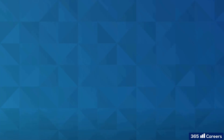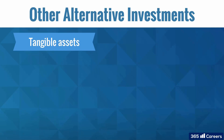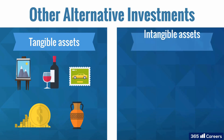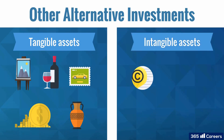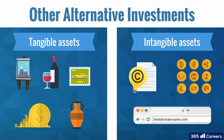Finally, we have investments that fall under the category of other types of alternatives. These include tangible collectibles like art, fine wines, stamps, coins, and antiques. This group also comprises intangibles, such as patents, domain names, and blockchain crypto assets or tokens.